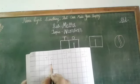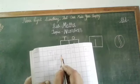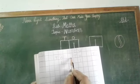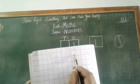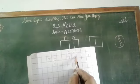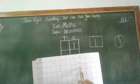You have to write number 1 like this. After that you have to leave two squares and start from here to write your number 1.